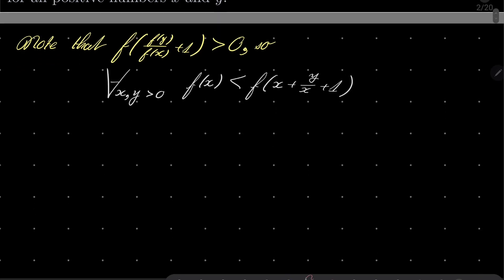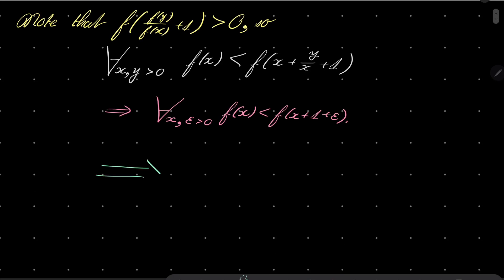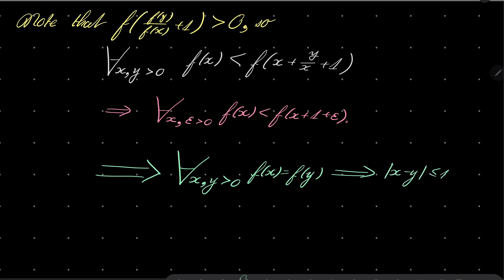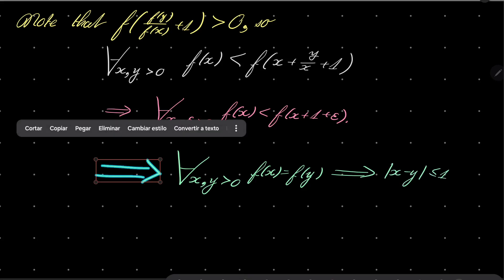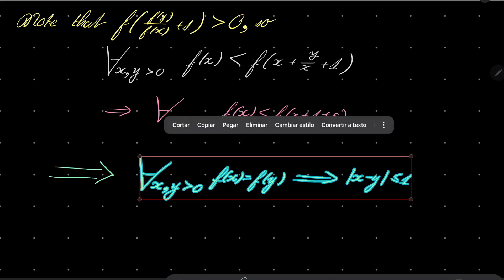Notice that y can be as small as we wish, which means that for every x > 0 and every ε > 0, f(x) < f(x + 1 + ε). This means — and this is very useful — that for every two positive real numbers, if f(x) = f(y), then the distance between these two numbers must be less than or equal to one. I'll call this condition the green triangle.